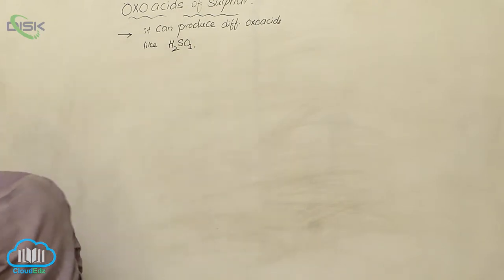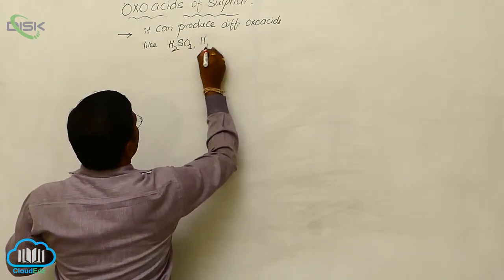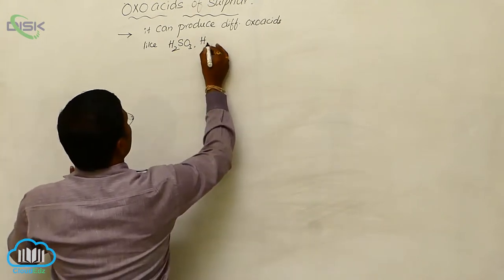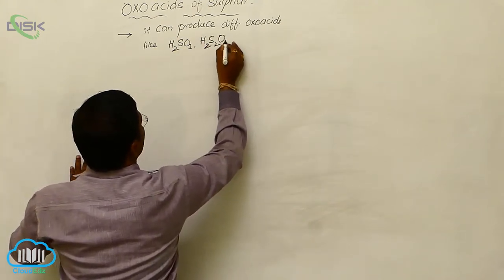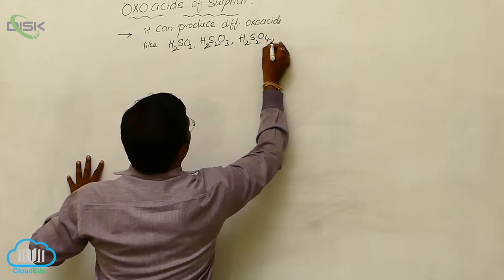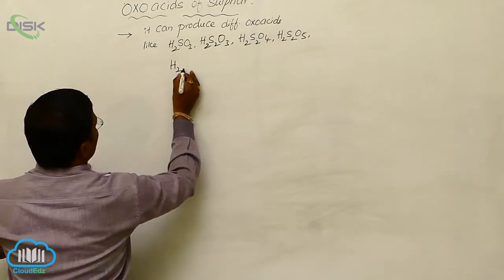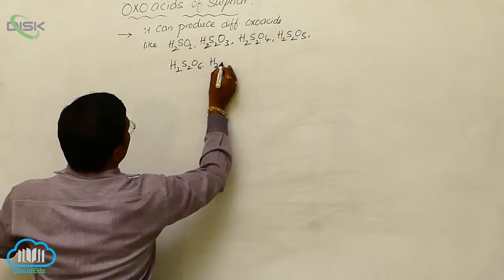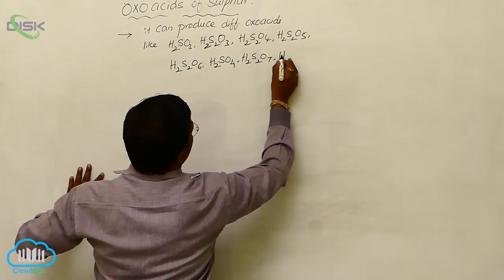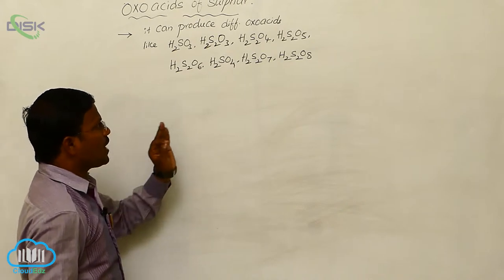We can call H₂SO₃ sulphurous acid. Other oxoacids include H₂S₂O₄, H₂S₂O₅, H₂S₂O₆, H₂SO₄, H₂S₂O₇, and H₂S₂O₈. These are some of the possible oxoacids of sulphur.